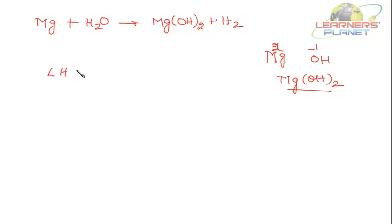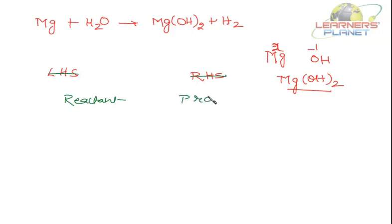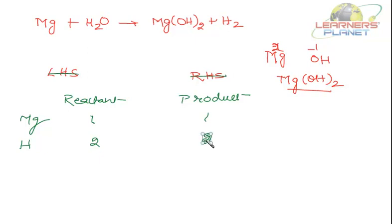First of all, write down LHS and RHS — the reactant side and the product side. Number of atoms of magnesium: 1 and 1. Number of atoms of hydrogen: 2 on the reactant side, but on the product side it's 4 (2 from OH and 2 from H₂). Number of atoms of oxygen on the reactant side: 1. Number of atoms of oxygen on the product side: 2. So what is needed to be balanced is water — if I put a 2 in front of the water molecule.